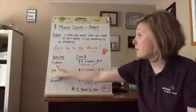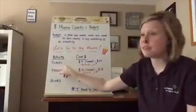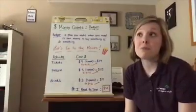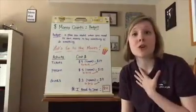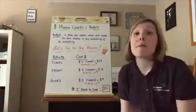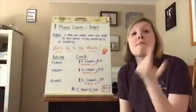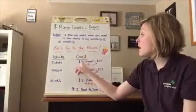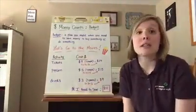For example, here I wrote down that tickets each cost nine dollars. Well then I thought, I'm not the only one who wants to go to the movies. I know that my husband wants to go with me and my son wants to go with me. So that means there's three people, and each of their tickets are going to cost nine dollars.